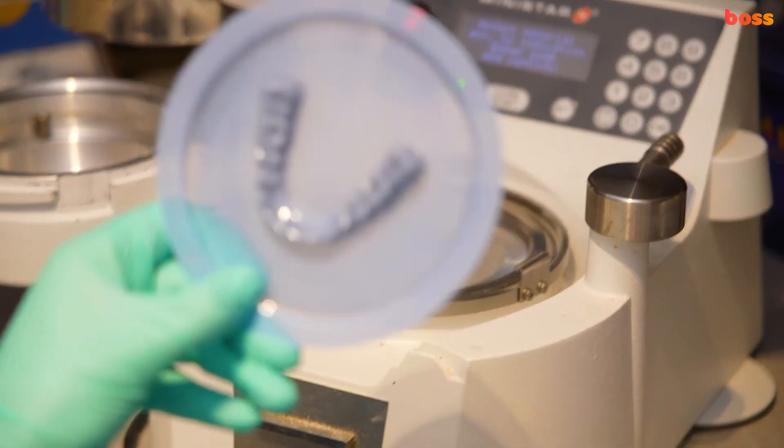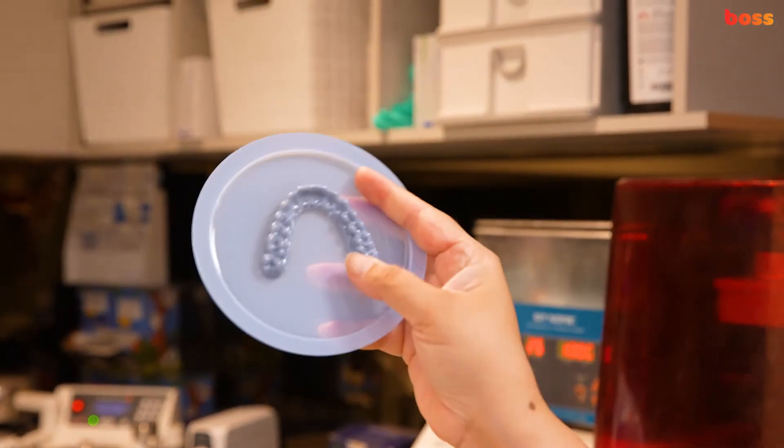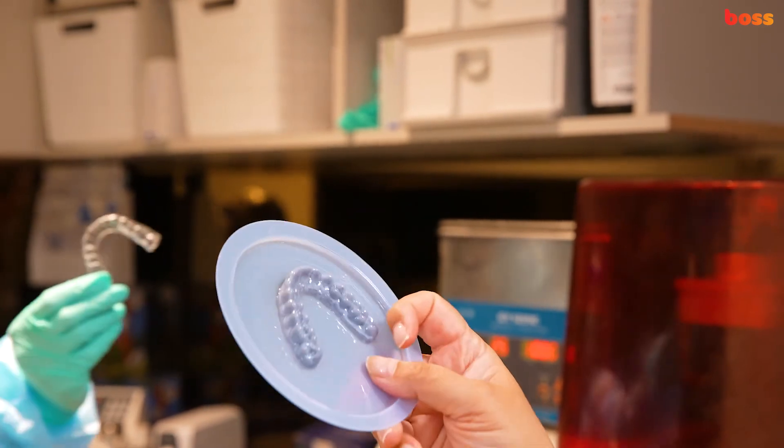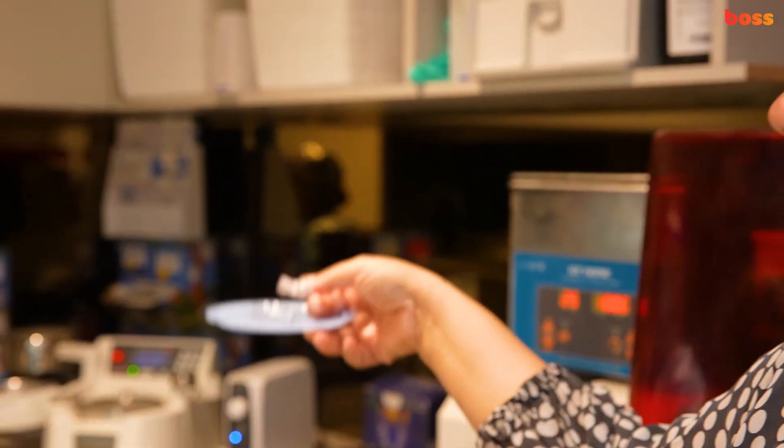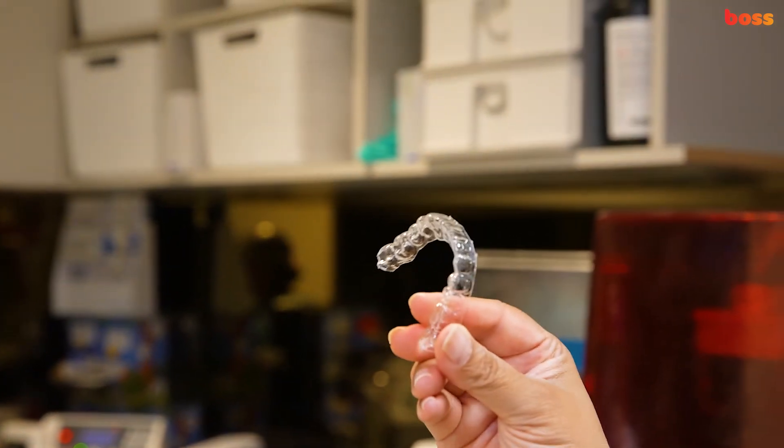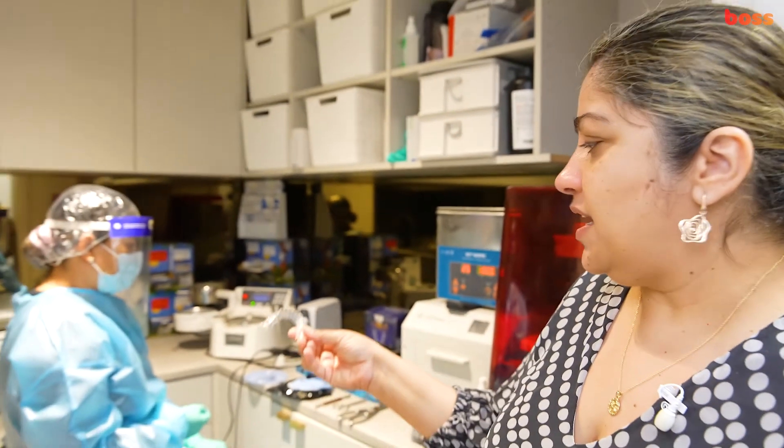Here we have a vacuum formed retainer over this 3D printed model, and what we really want to create is this finally. Now this can be done very quickly if you have a 3D printer. From scan to print could be 20 minutes, and you can see how quickly that was done.